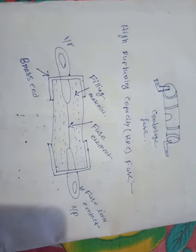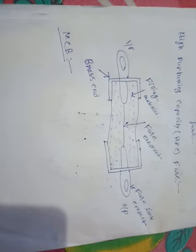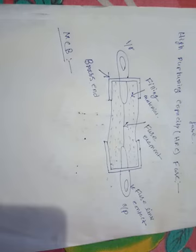The next device is the MCB, which means miniature circuit breaker. It is a device which protects the conductor or electrical installation from short circuit or overload. Nowadays, instead of fuses, MCBs are used for both residential and industrial wiring. They can be single pole, two pole, three pole, or four pole.